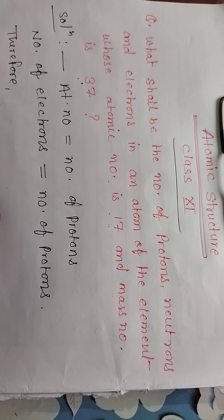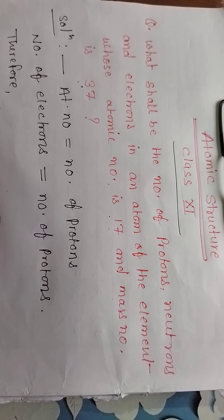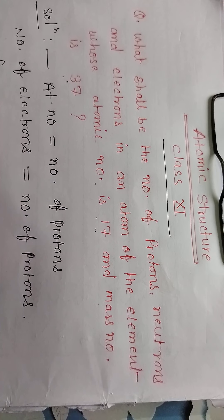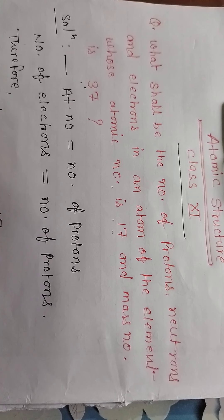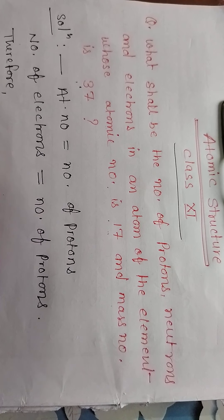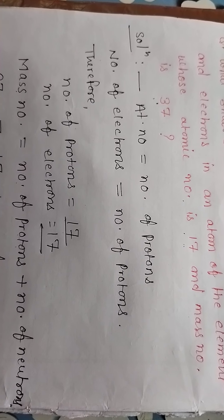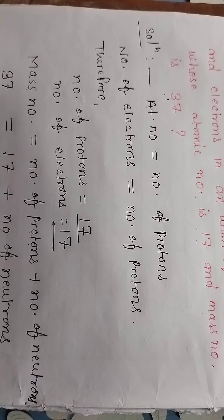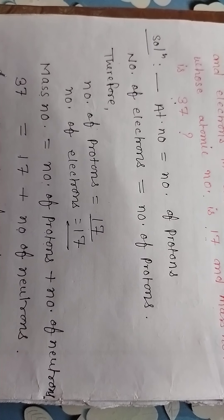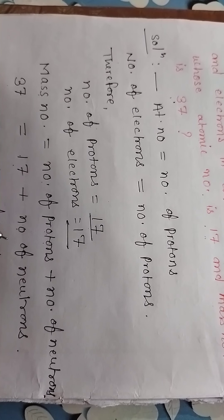The element has atomic number 17 and mass number 37. Atomic number equals number of protons, and number of electrons equals number of protons, so electrons equal 17. Mass number equals number of protons plus number of neutrons, so neutrons equal 37 minus 17, which is 20.